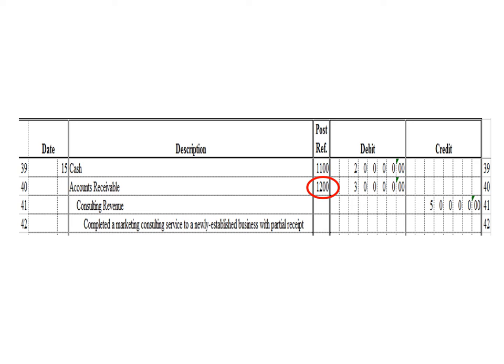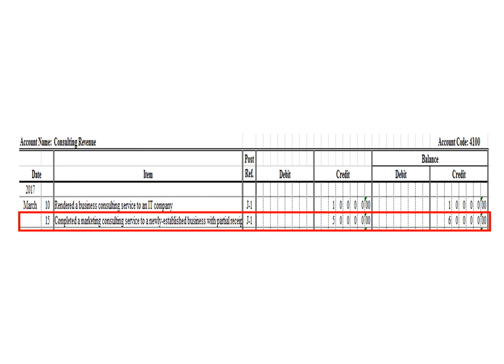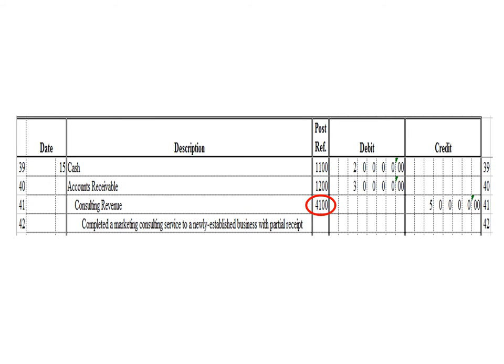Let us post the credit entry — a credit to consulting revenue for 50,000 pesos. In the consulting revenue ledger, we write date 15, description: completed a marketing consulting service to a newly established business with partial receipt, posting reference J1. Under the credit column, write 50,000 pesos. The balance is 60,000 pesos — previous credit balance of 10,000 plus 50,000 credit. As of March 15, the consulting revenue ledger balance is 60,000 pesos credit. After posting, write posting reference 4100.